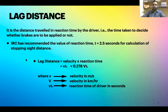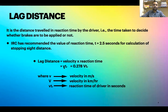Lag distance is the distance traveled in reaction time. The Indian Road Congress has recommended the reaction time to be 2.5 seconds. When no reaction time is given, you consider it as 2.5 seconds. Lag distance is given by v × tr, where v is velocity in meters per second and tr is the reaction time in seconds.